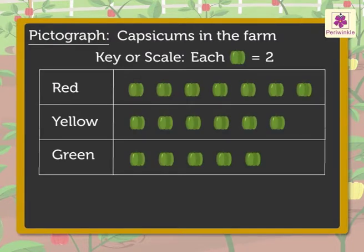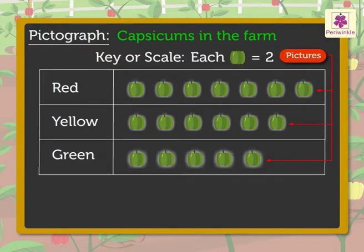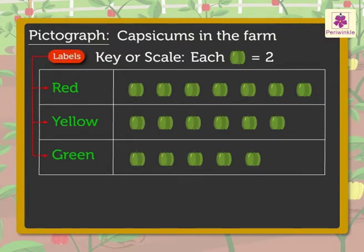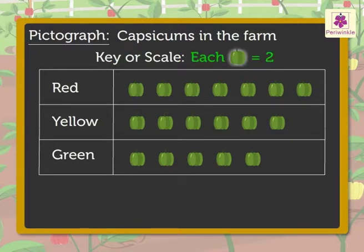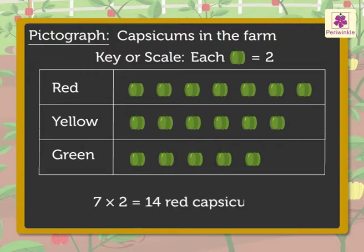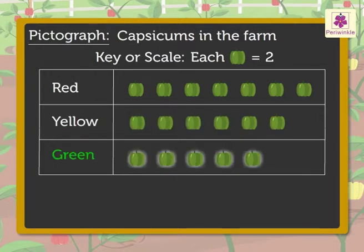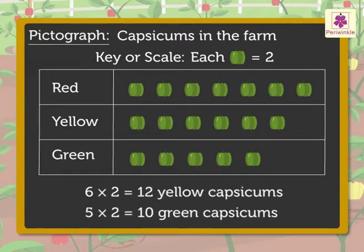Joy visited a farm which was full of red, yellow, and green capsicums. Let's read this pictograph. The title 'Capsicums in the Farm' tells us the pictograph is about the number of capsicums in the farm. The labels give information on the colors of the capsicums. The key or scale tells us that each capsicum picture is equal to two capsicums. There are seven red capsicum pictures, meaning seven multiplied by two equals 14 red capsicums.